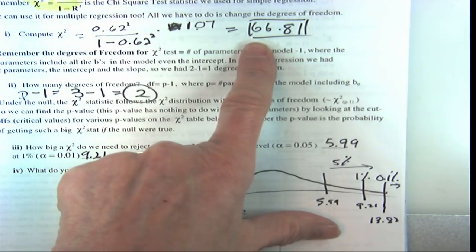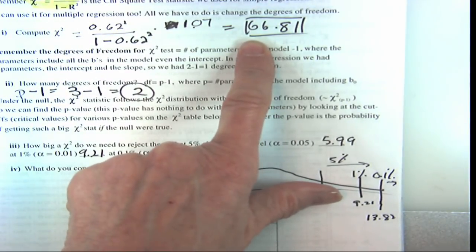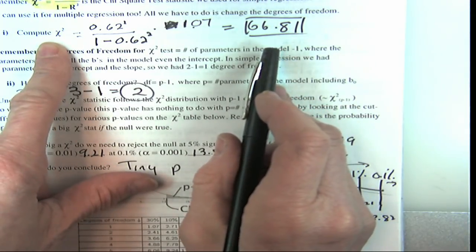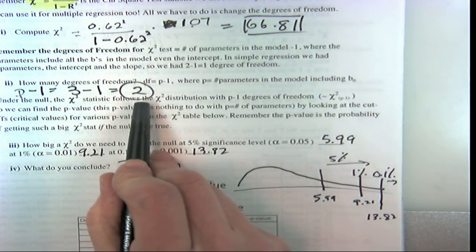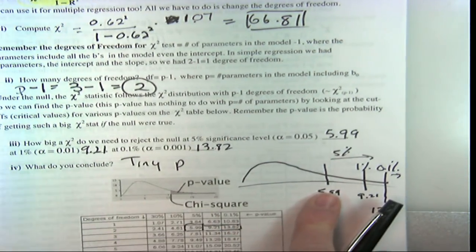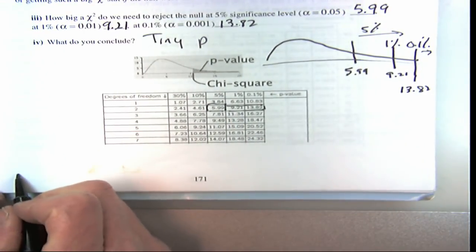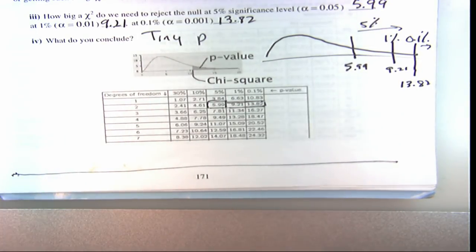When the null is true, for the F we'd expect to get 1, and for the chi-square we'd expect to get its degrees of freedom, which is 2. We got so much further away from that. So the picture looked like this — let's take a quick look at our p-value calculator so we can figure this out, and we'll go back to the PC.